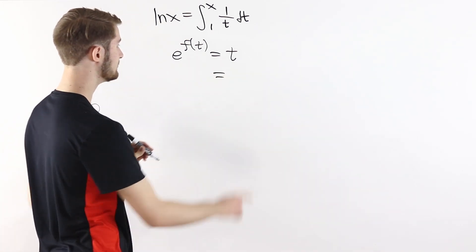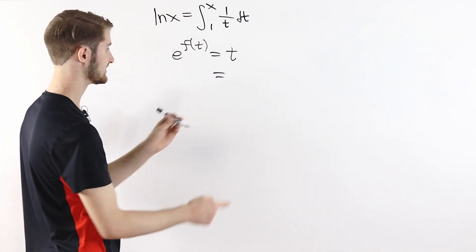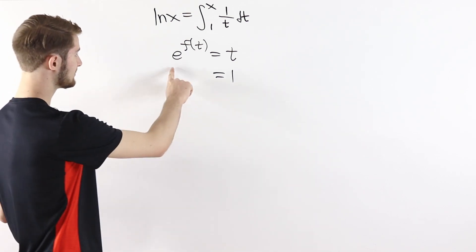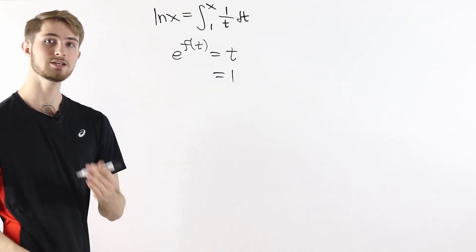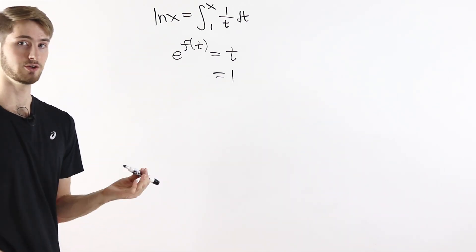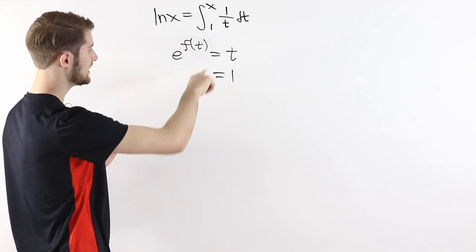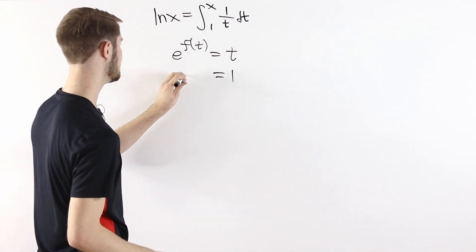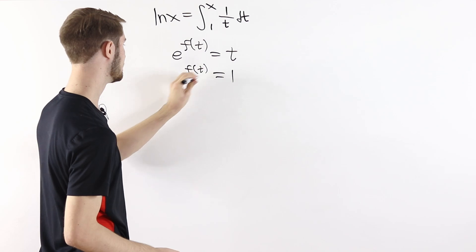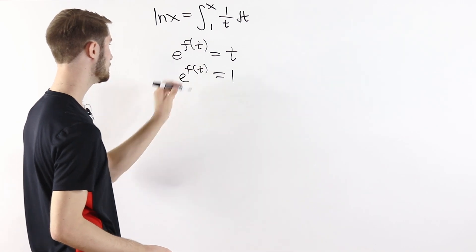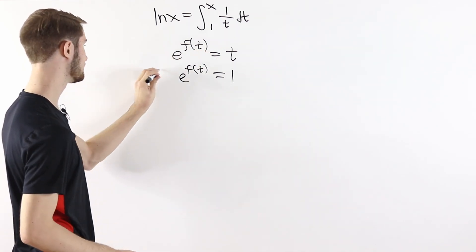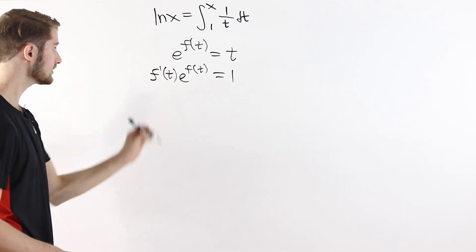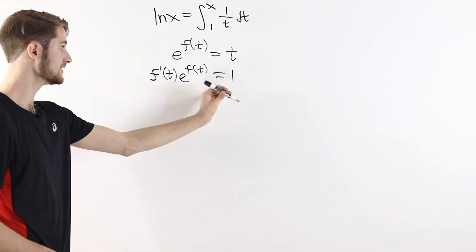The derivative of t with respect to t is just one. On the left side, to take the derivative with respect to t, we can use the chain rule. The derivative of e to the x is just e to the x, so we get e to the f of t here. And then by the chain rule, we multiply by the derivative of f, which is f prime of t.